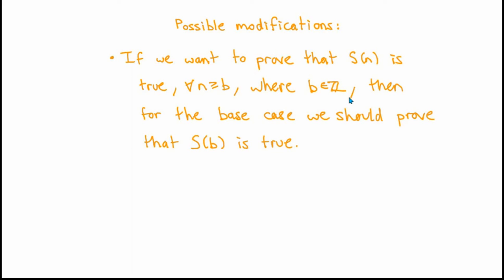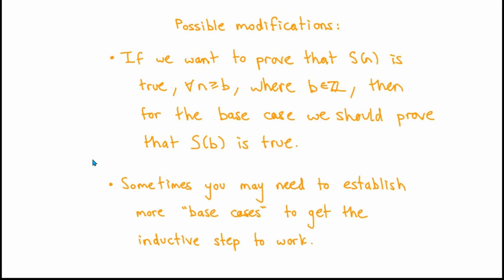First of all, it may be the case that the statement s(n) that you want to prove isn't naturally written as a statement about the collection of all natural numbers, but about the collection of all numbers greater than or equal to some integer b. It's not difficult to see that in this case you could have rewritten your problem as a statement about the natural numbers just by translating everything over. So the principle of mathematical induction can still be used, but the base case that you will need to prove is then going to be s(b). The second thing that can sometimes throw people off is that in some problems, depending on the nature of the statement s(n), you may actually need to establish more base cases to get the inductive step to work. For example, when you're trying to prove s(n), you may need to know something about s(n-1) and s(n-2), so you'd probably have to prove that both s(1) and s(2) are true.